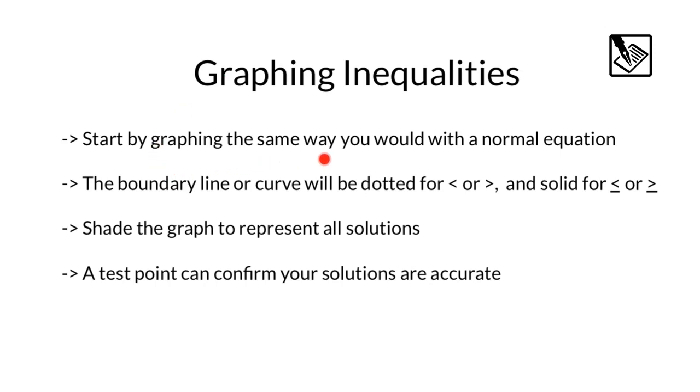So you want to start by graphing the same way you would with a normal equation. Then the boundary line or curve will be dotted or solid. The dotted line is when it's not equal to, the solid line is when it is equal to, basically meaning points on the line count as solutions or they do not. Then you want to shade the area of the graph, the region that represents all solutions to the inequality. We can use test points to confirm that solutions are accurate.